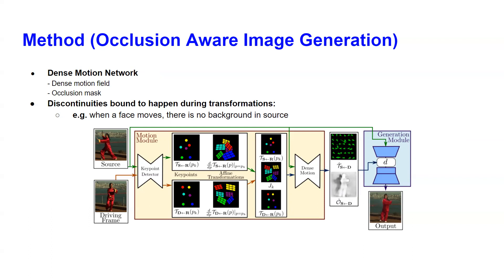For example, as I said before, when in the source image object is some human face and it changes according to the driving frame, when it rotates there is a background which doesn't exist in the source. In that case, authors use something called occlusion maps to inpaint that background.